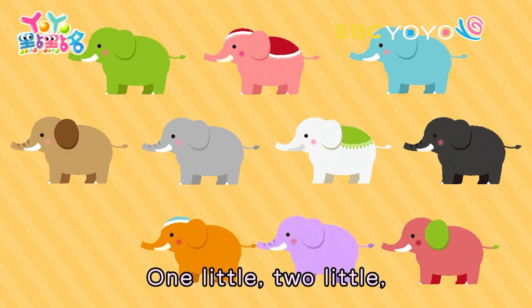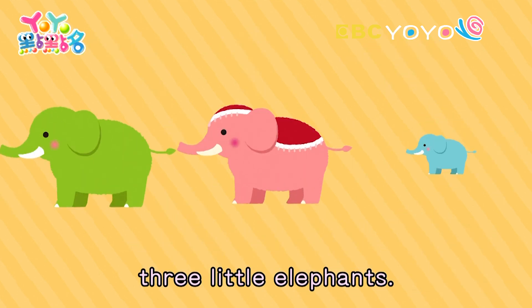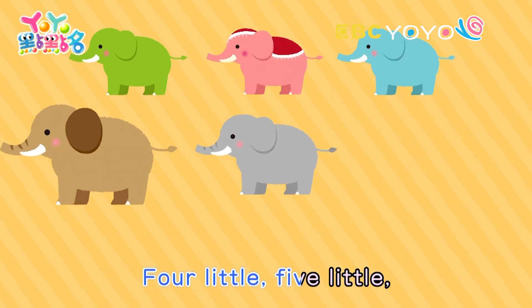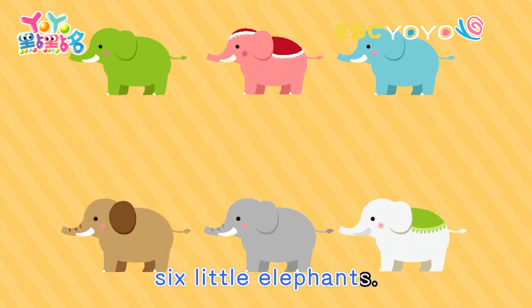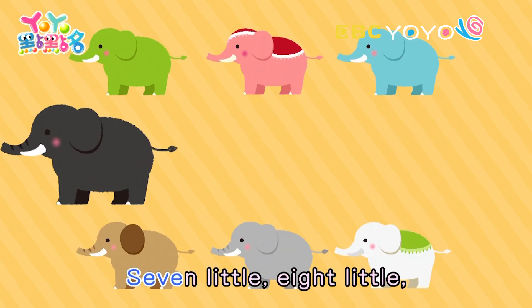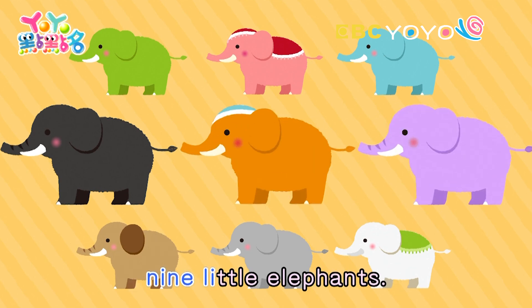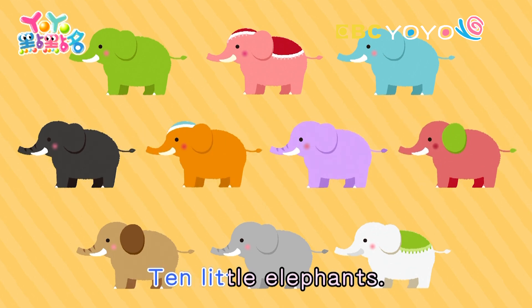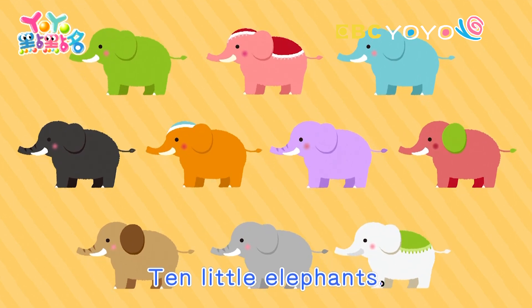One little, two little, three little elephants. Four little, five little, six little elephants. Seven little, eight little, nine little elephants. Ten little elephants.